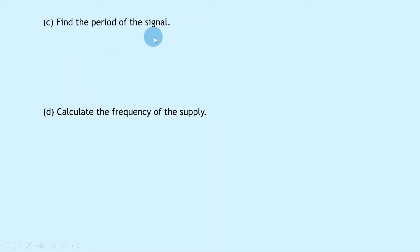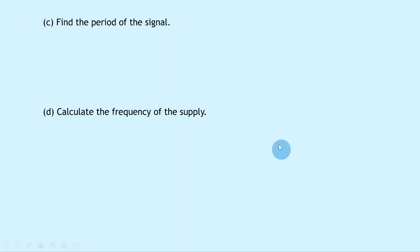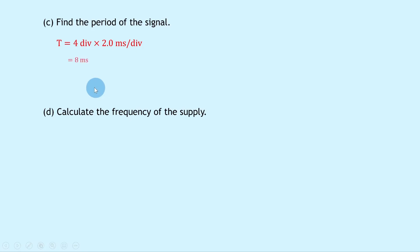Part C says to find the period of the signal. To find the period or frequency we need to deal with the horizontal plane, i.e. the x-axis. For one complete wave — all the way up, all the way down, and back to the start — there are four divisions. So T equals four divisions times the time-based setting of 2.0 milliseconds per division, giving eight milliseconds, which is 8 × 10⁻³ seconds.